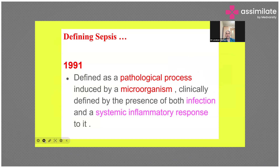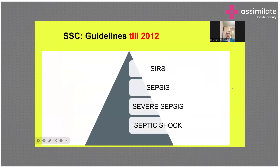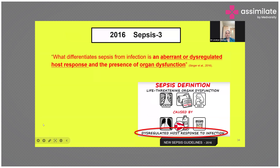In 1991, sepsis was defined as a pathological process induced by microorganisms, including both patients with SIRS and patients with infection. This same definition continued till 2012, including terms like SIRS, sepsis, severe sepsis, and septic shock. The recent 2016 Sepsis-3 definition points out that what differentiates sepsis from infection or sepsis mimic is an aberrant or dysregulated host response, which leads to organ dysfunction due to the presence of infection. The three key variables are: presence of infection, dysregulated host response, and organ dysfunction.